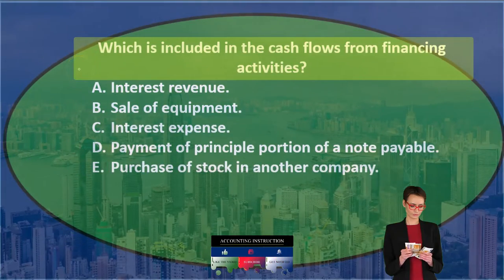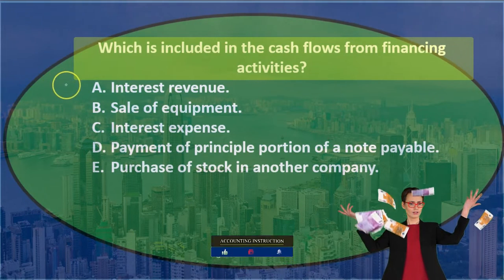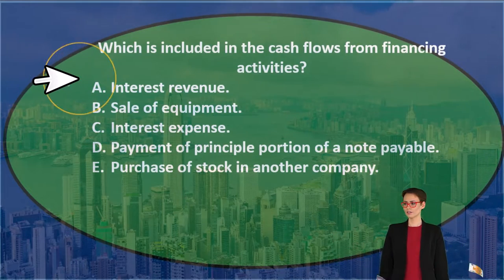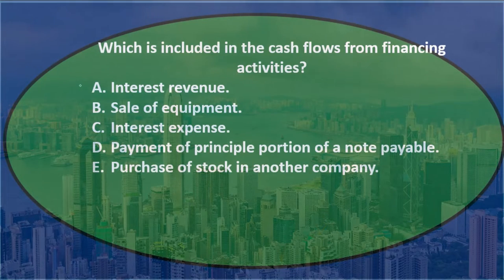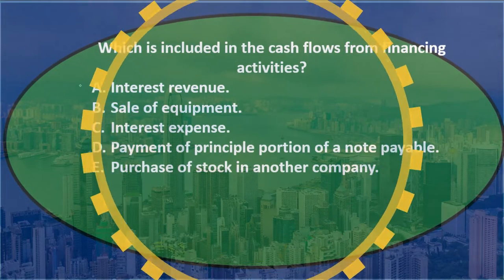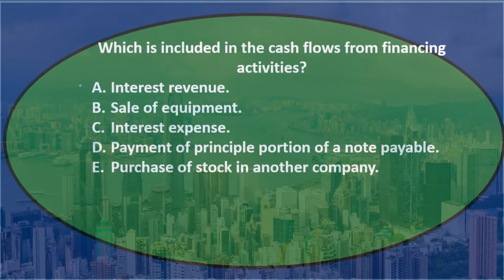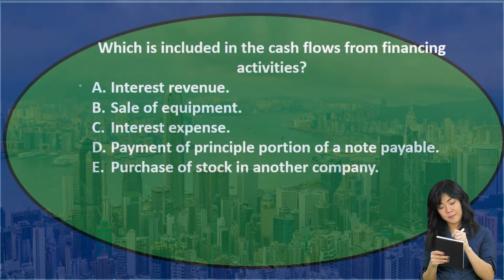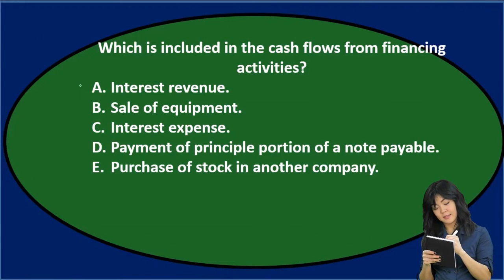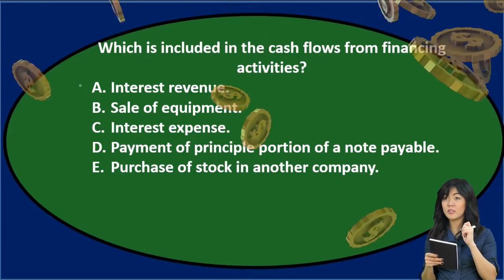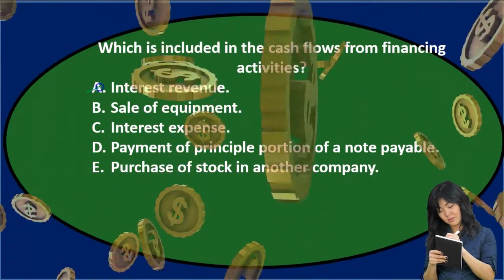Which is included in the cash flows from financing activities? A) interest revenue — the journal entry for interest revenue would be debit cash and credit revenue. Revenue is an income statement account, therefore it's an operating activity. It's a little confusing because interest revenue indicates we loaned money, so we might think it's investing or financing, but the interest portion is part of operations — operating activity.